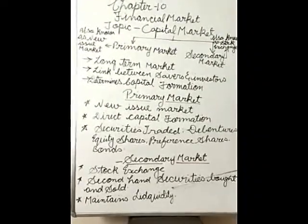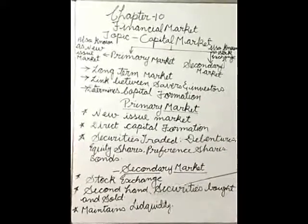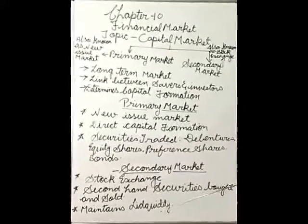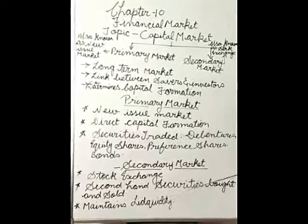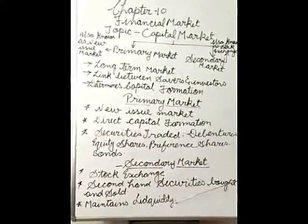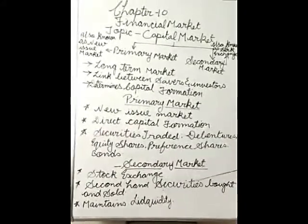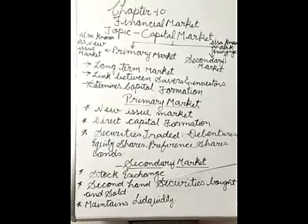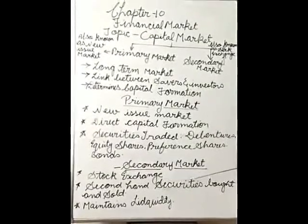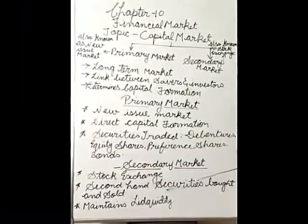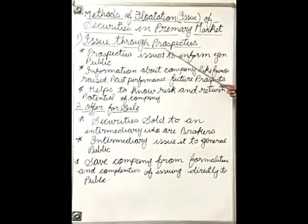The secondary market is also known as stock exchange. Second-hand securities are bought and sold here, meaning there is no direct capital formation. Rather, it maintains liquidity because the securities are bought and sold between two household savers and not directly with the business firm.